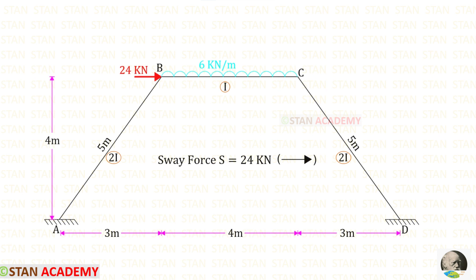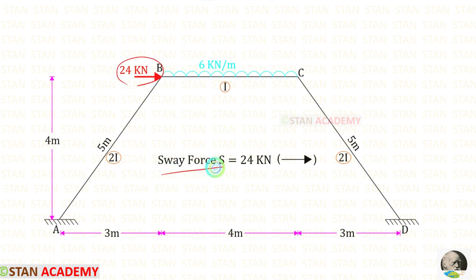Now let us find the sway force S. Since this is a symmetrical frame, if we remove the 24 kN nodal load there will be no sway — it becomes a non-sway frame. So this nodal load is the only force causing the sway, and we can directly take it as the sway force S, acting towards the right side.